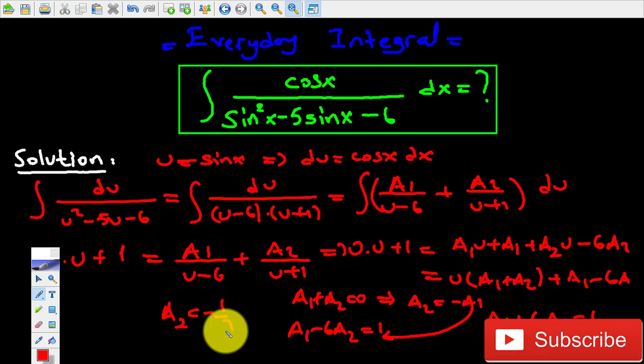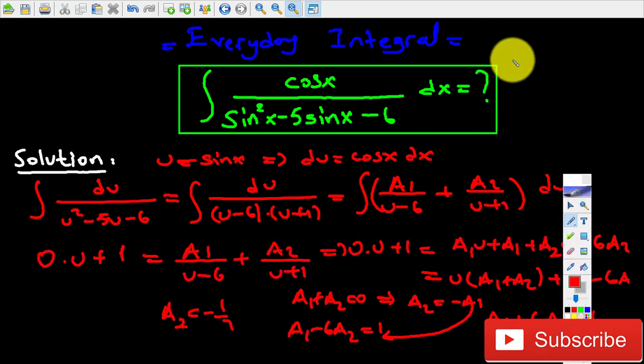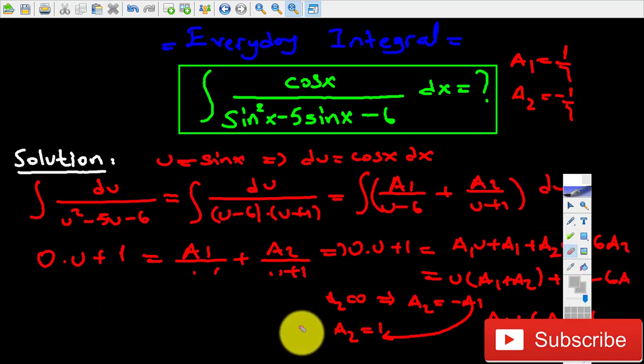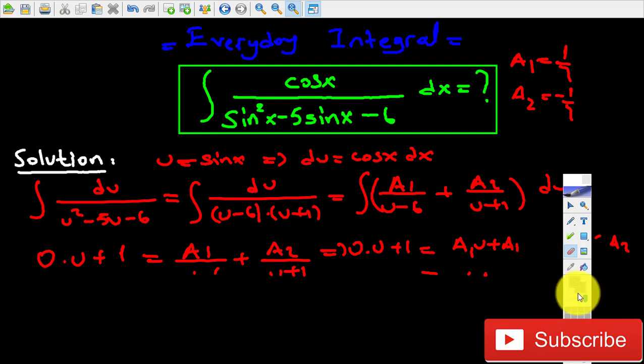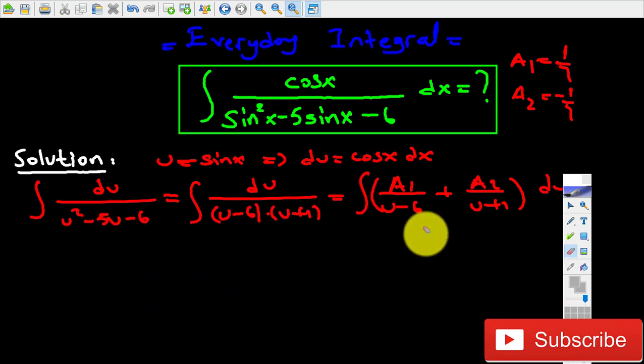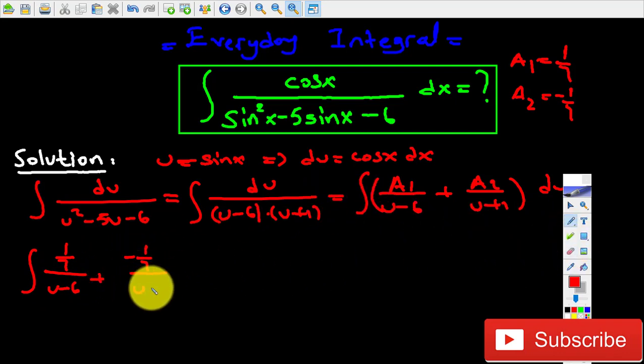We found A1 value and A2 value. So let's go back to the original integral, but before that, let me put A1 is one over seven, A2 is negative one over seven, and let me clean up this part. That's going to be equal to 1 over 7 over (u minus 6), minus 1 over 7 over (u plus 1) du.